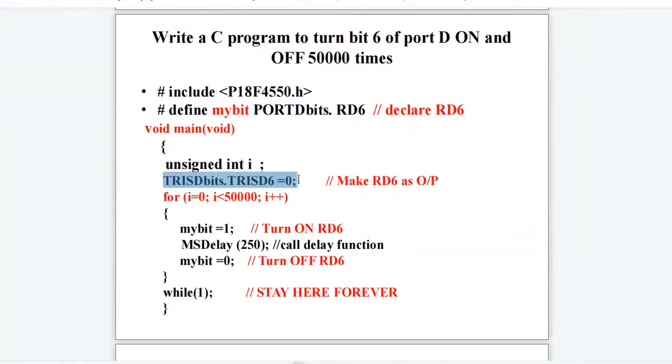Here, we have written the instruction TRISDbits.TRISD6 equals to 0. We have selected a single pin of port D and made it as an output pin. This for loop will run for 50,000 times. Inside the for loop, mybit equals to 1. We will send the 1 on pin RD6. After that, we have called the delay. We have sent 0 on pin RD6.